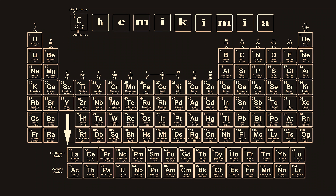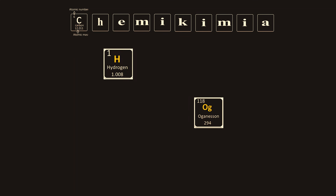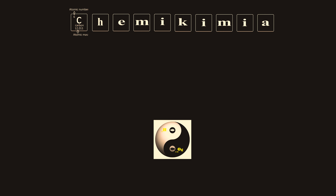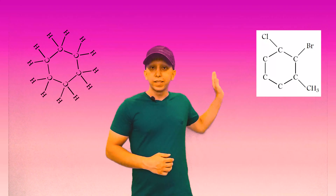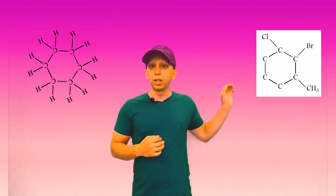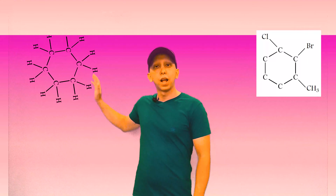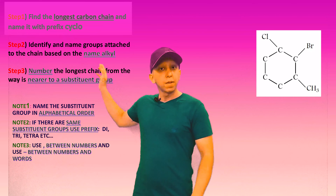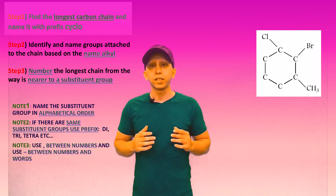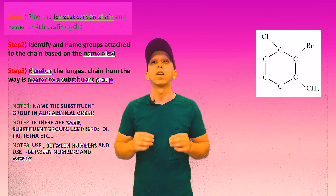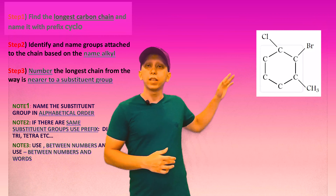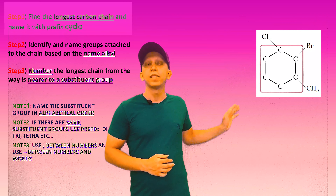Hi guys, today we will talk about how to name cyclohydrocarbons. I bring three examples for you that at first glance appear similar to each other, but if you pay more attention: the first structure is an alkane because all of its bonds are single, the second structure is an alkene as we have a double bond, and the third structure has a triple bond — and we know when we have a triple bond the name of our hydrocarbon is alkyne.